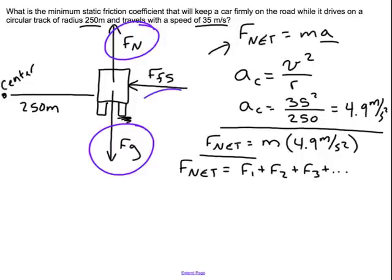I know that FG is going to cancel FN, and so I am not even going to bother putting them in here. I could if I wanted to, but I would know that they would just cancel each other out. What I am going to actually find is that the F net is equal to just one lone little force, which is the friction, the static friction.